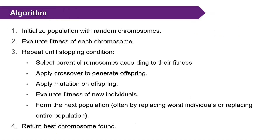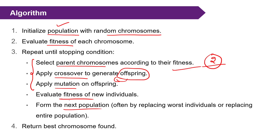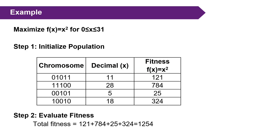The algorithm works as follows: First, initialize a population with random chromosomes. For each solution, calculate the fitness value. Then select parent chromosomes according to their fitness. Apply crossover to the two selected parents to generate offspring. Apply mutation to the offspring. Recalculate fitness for the newly generated solutions and create a new population. This process repeats until the best chromosome is found.